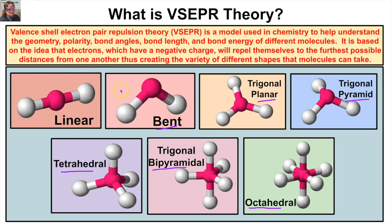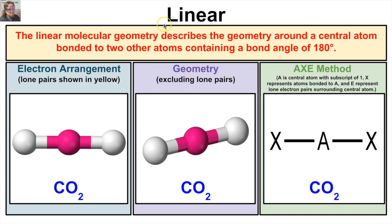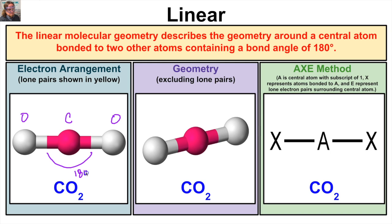Let's start by looking at the linear molecular geometry. The linear molecular geometry describes the geometry around a central atom bonded to two other atoms, containing a bond angle of 180 degrees. For example, with carbon dioxide, we have carbon at the middle bonded to two oxygens, and the bond angle between the carbon and oxygens is 180 degrees. Carbon dioxide has no lone electron pairs surrounding the central atom, giving us the linear shape.